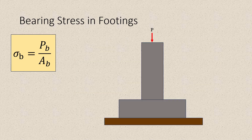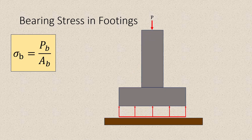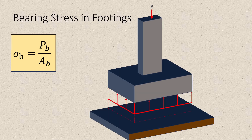Consider a footing with a downward concentrated load P applied at the column. This load comes from loads transmitted to the column from beams and girders, which are supported by columns, which are supported by the footing, which in turn is supported by the soil below. Drawing the FBD, the soil provides a resulting distributed reaction — this is a bearing stress applied over the area. Viewed in 3D, the projected contact area is basically the area of the footing.